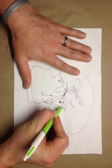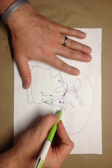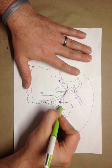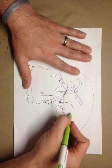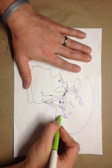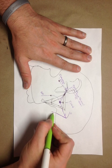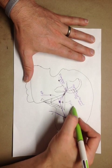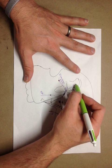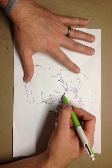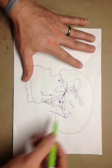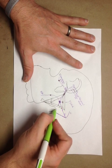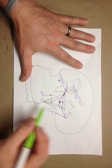Up here is the foramen rotundum, and this is where V2 is coming in. Here's V1, the ophthalmic branch, and here's V3, the mandibular. V1 is going to come up through the superior orbital fissure — here's the inferior orbital fissure and the superior orbital fissure above it, which is where V1 comes in. V2 comes in through here, and then down here going toward the pharynx area is the pharyngeal nerve.